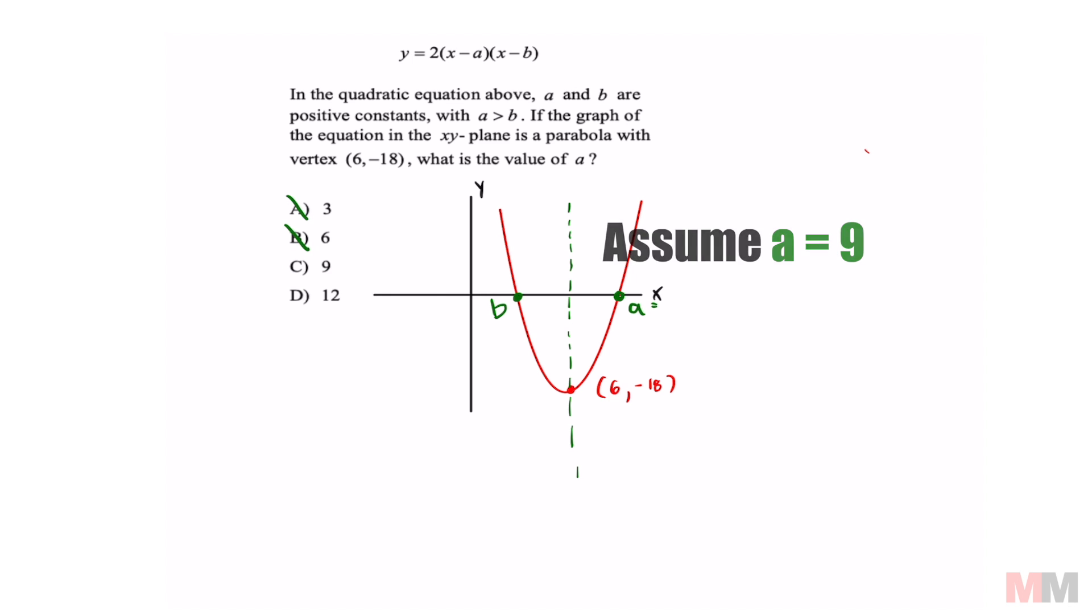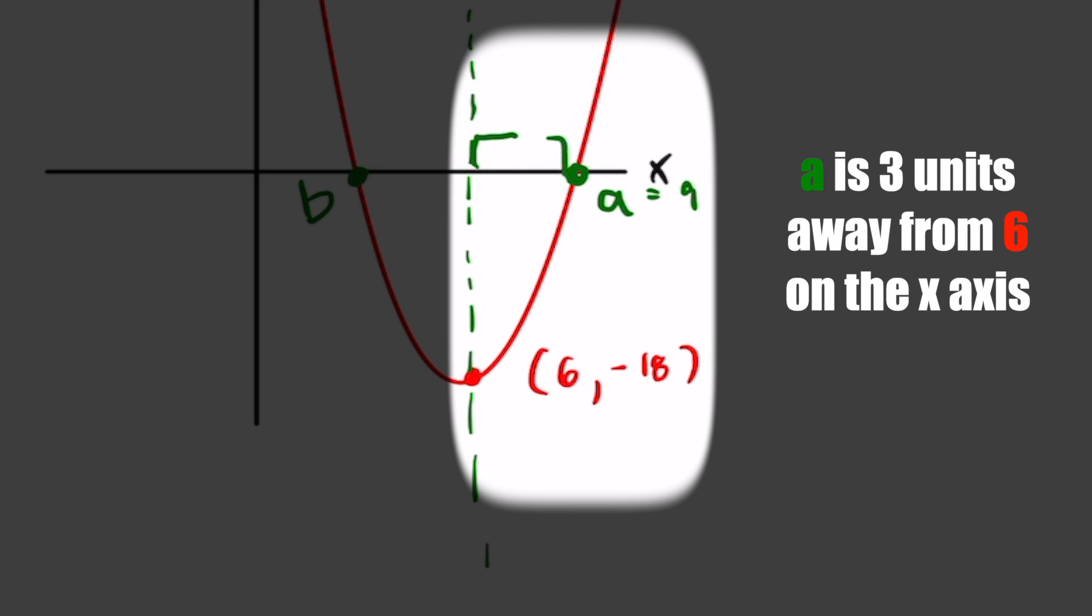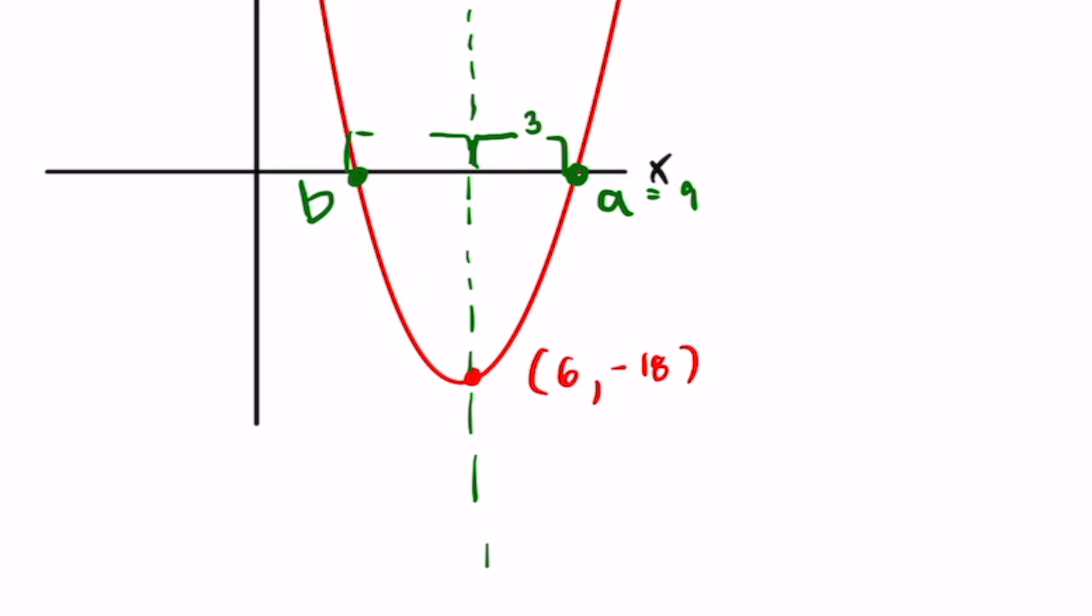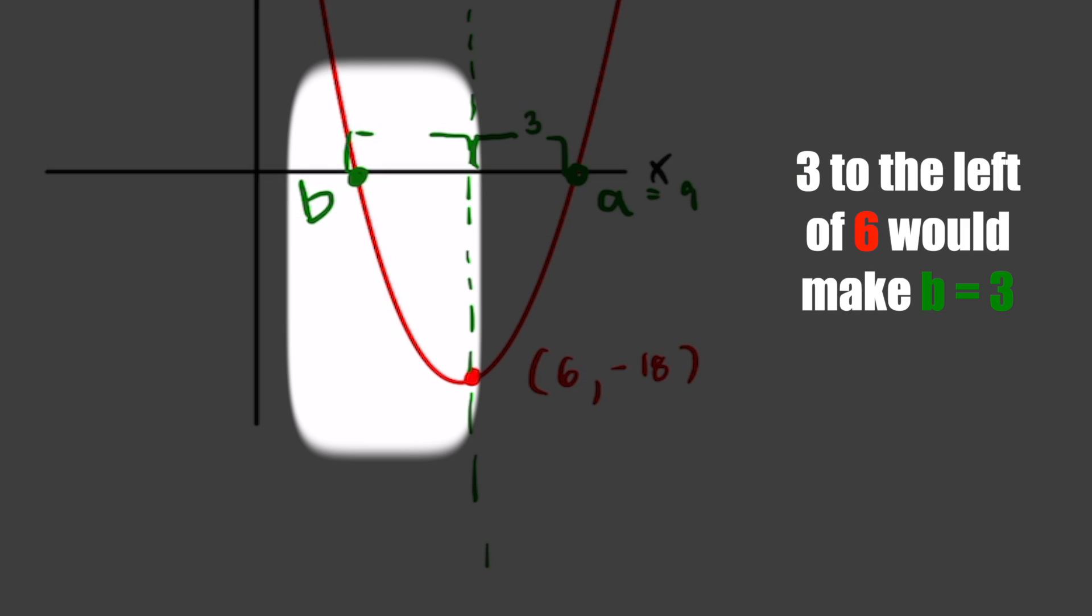Let's assume a equals 9. That is 3 units away from your vertex. Since a quadratic graph is symmetric, 3 to the left of 6 will mean that b equals 3.